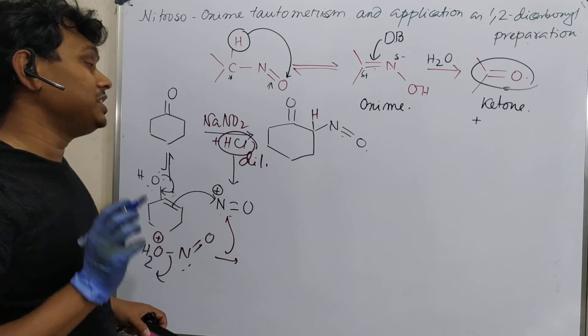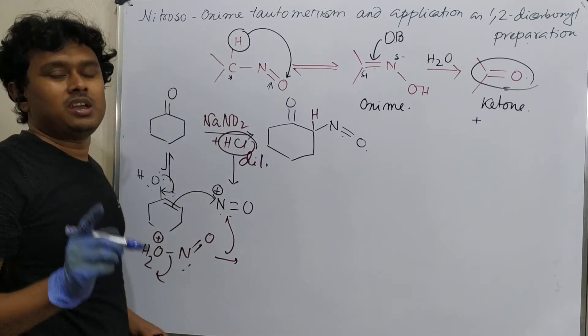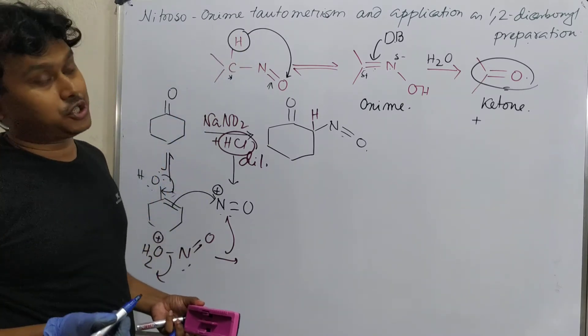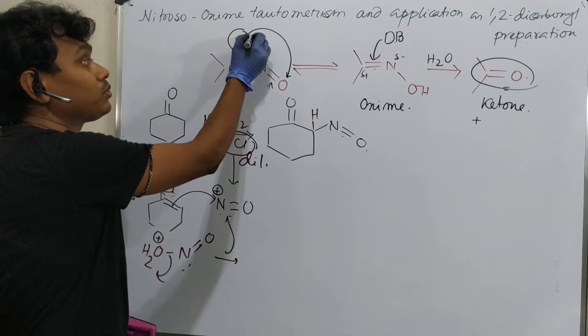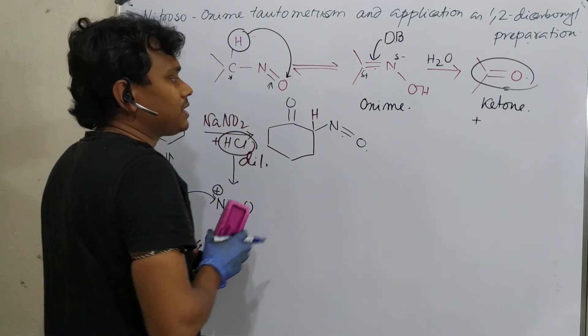And by the way, one interesting point, there must be one proton. If there is no proton, tautomerization not possible. So this proton is essential. Please keep it in mind. So this.